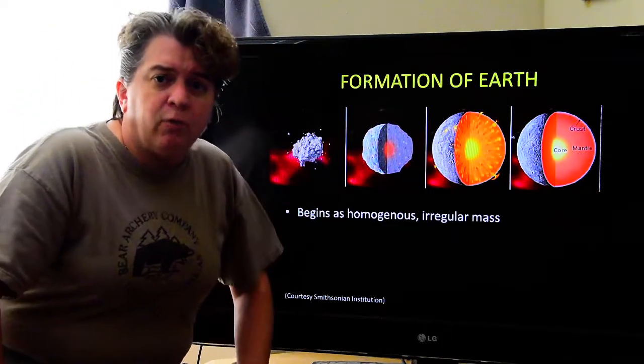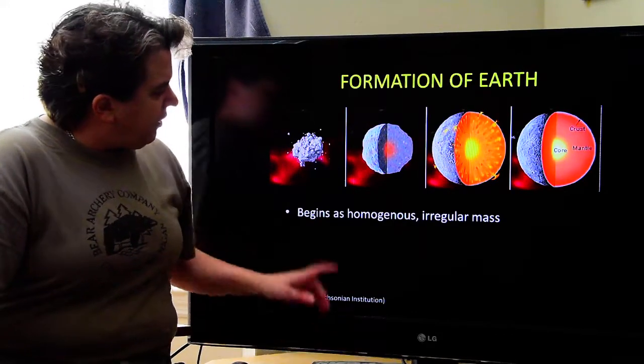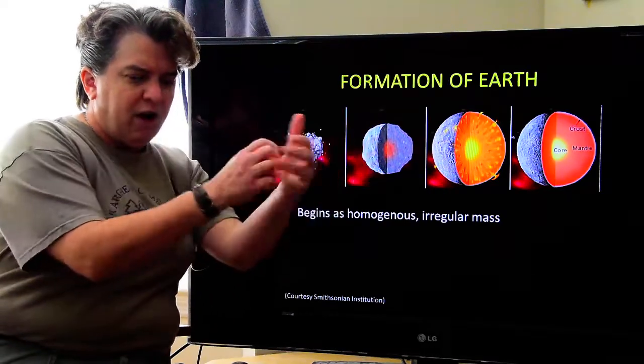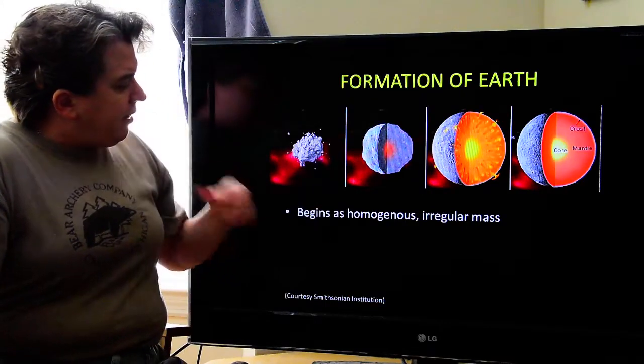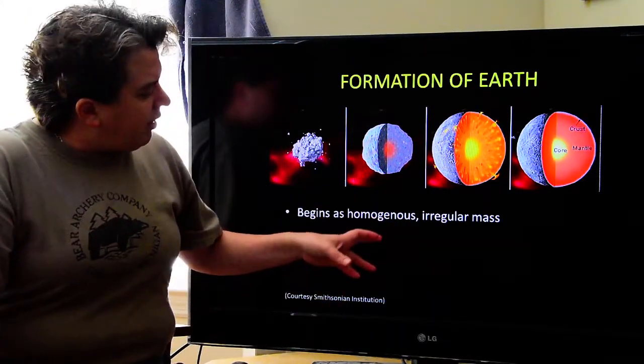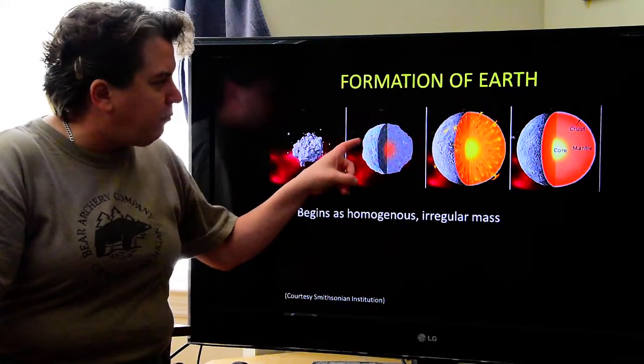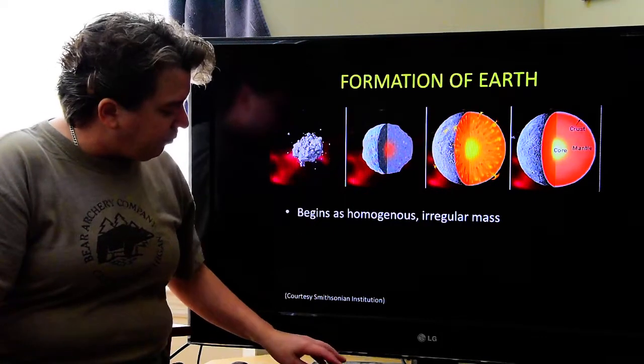what specifically was happening with Earth at this time? Well, Earth began as this irregular homogenous mass. So, all these pieces of this rocky material hit and stuck together. And irregular means it wasn't spherical. And homogenous means the composition was exactly the same whether you were out here at the edge of the planet or here in the center of the planet.